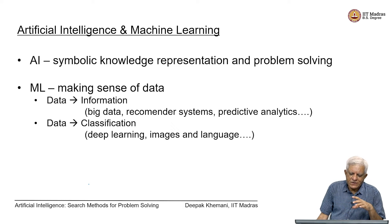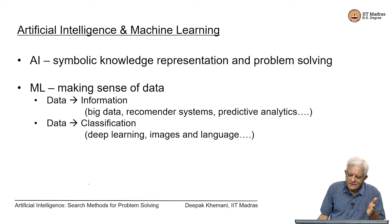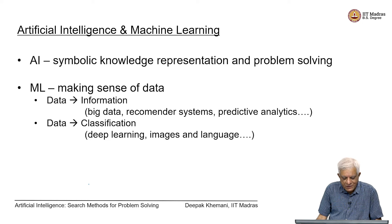We can distinguish between AI and machine learning: AI encompasses machine learning, as machine learning was part of AI from the start. In AI we are concerned with symbolic knowledge representation and problem solving. In machine learning we are more focused on making sense of data — extracting information for big data, recommender systems, predictive analytics, or doing classification, for example deep learning on images or language.